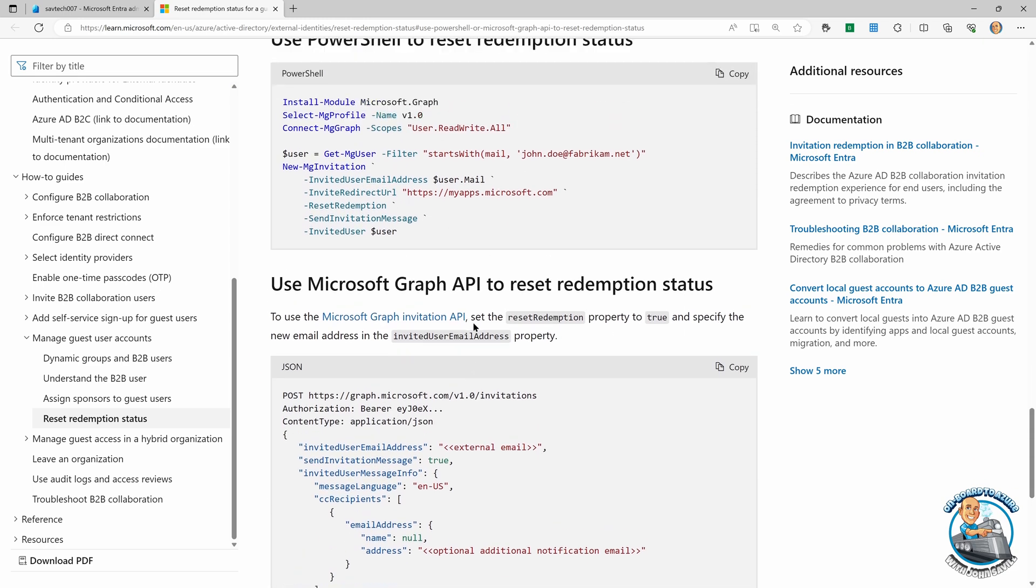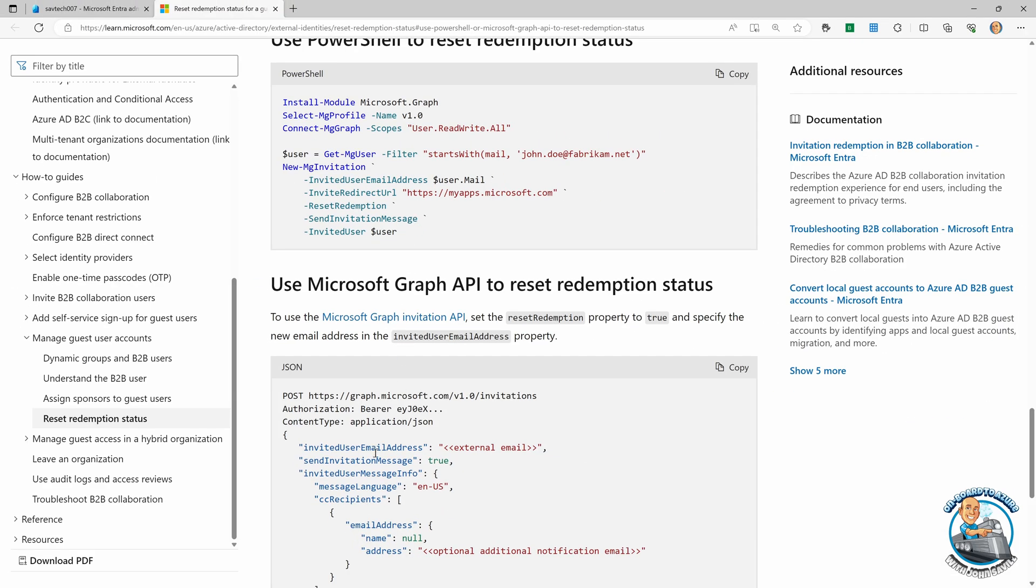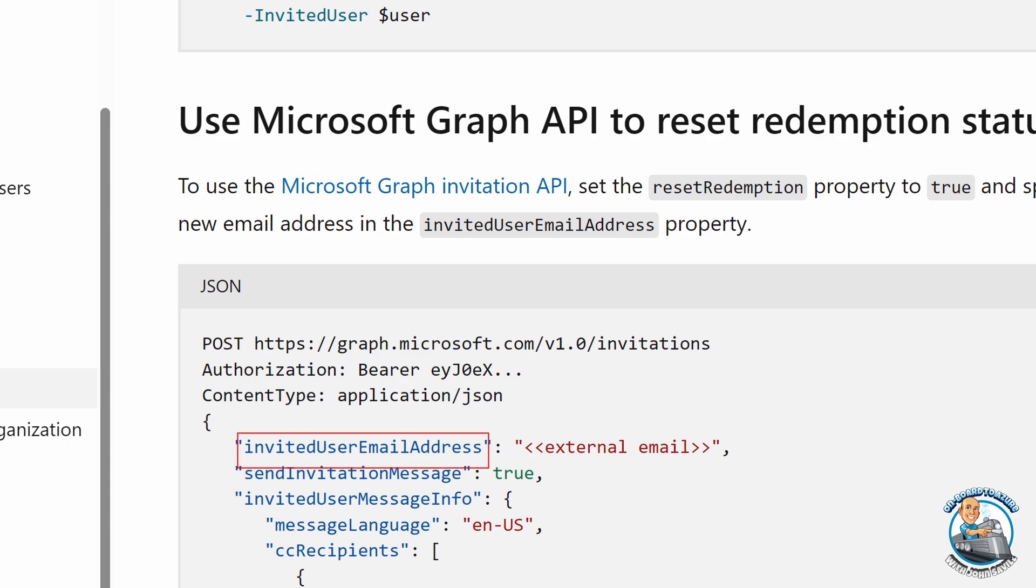Now if you do it through either of these methods, one of the key things is you will update this invited user email address. So that's where you do it in the PowerShell. You can see it in the Graph as well.